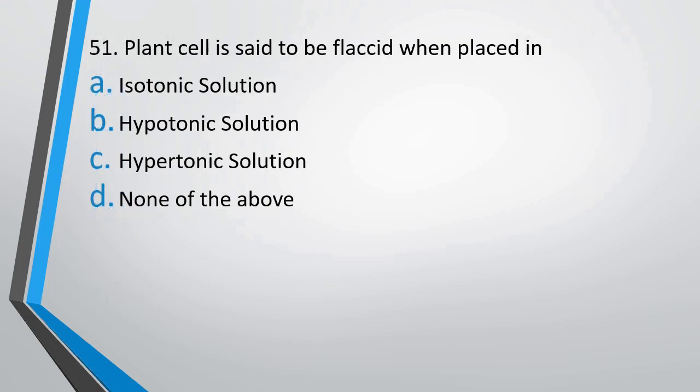Question number 51: A plant cell is said to be flaccid when placed in — isotonic solution, hypotonic solution, hypertonic solution, or none of the above? The correct answer is option A. When the plant cell is placed in an isotonic solution, the cell is said to be flaccid.